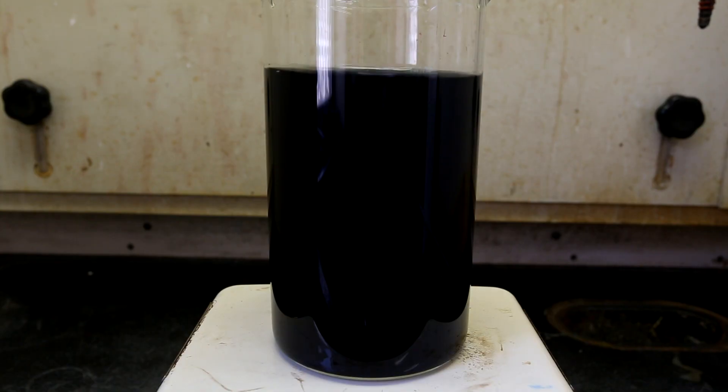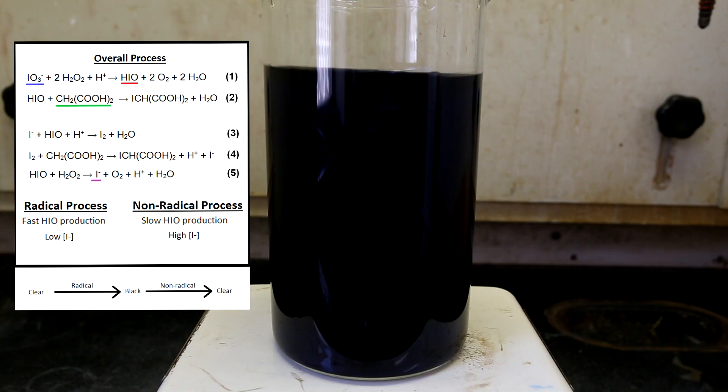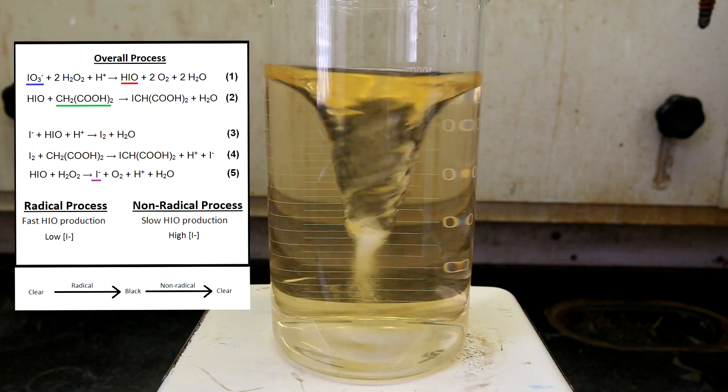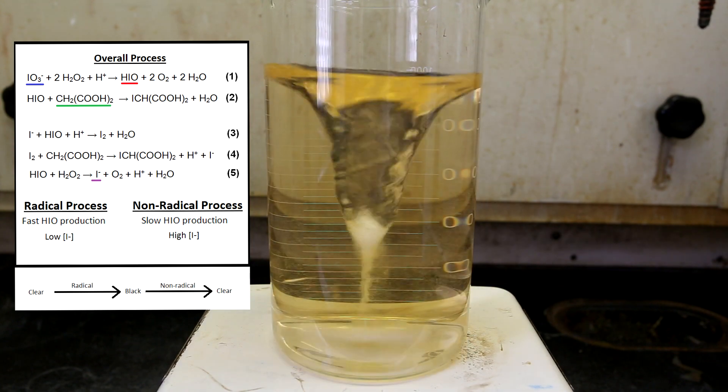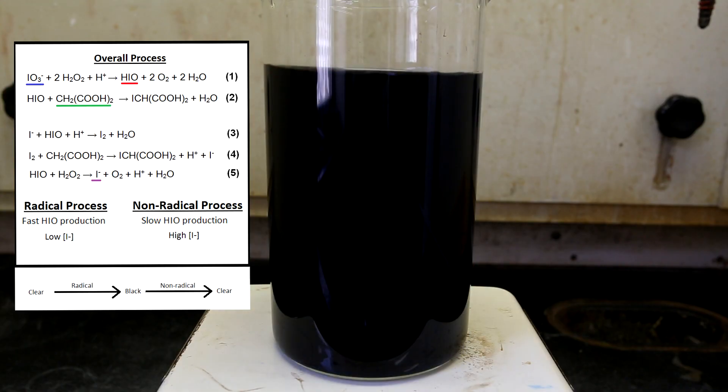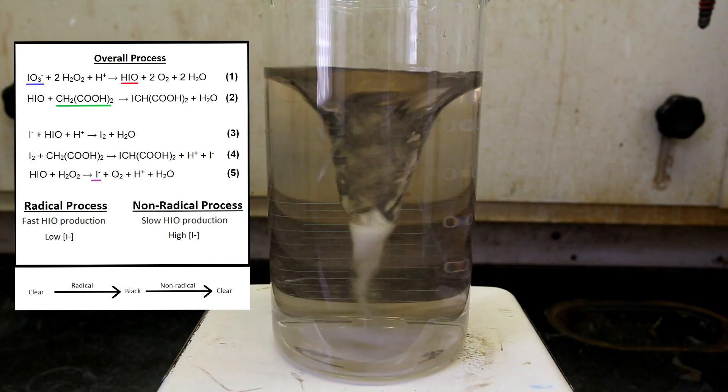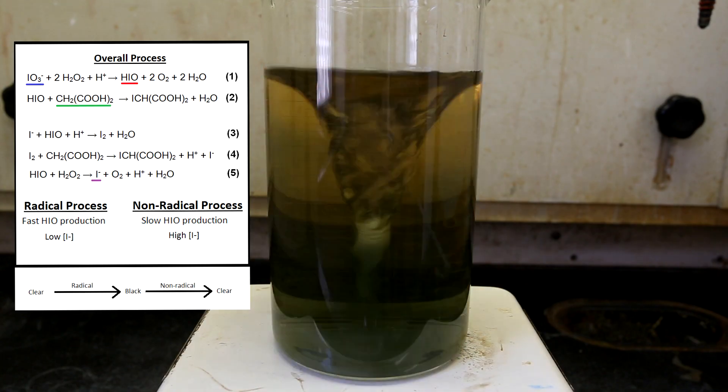And now for a little more detail. The color changes in this reaction are basically due to a battle between two different processes. One process is a radical-based process, while the other one is a non-radical-based one. Even though the collections of reactions that comprise each process are very different, they both have the same overall reaction as shown in equation 1. To avoid confusion, I've underlined several key molecules. Iodate is underlined in blue. Hypoiodous acid is underlined in red, and malonic acid is underlined in green.